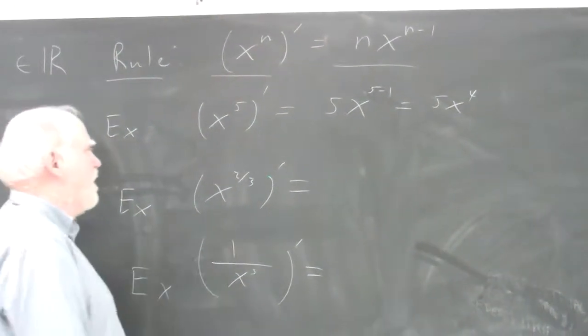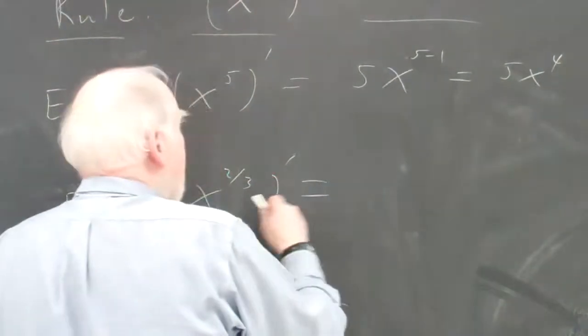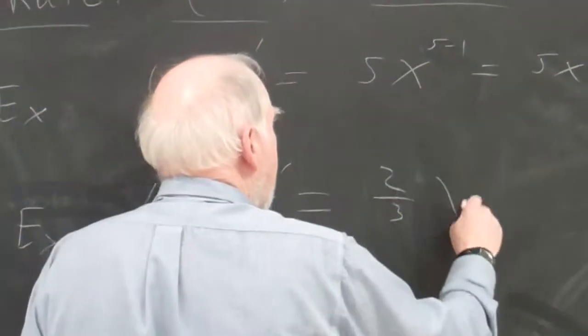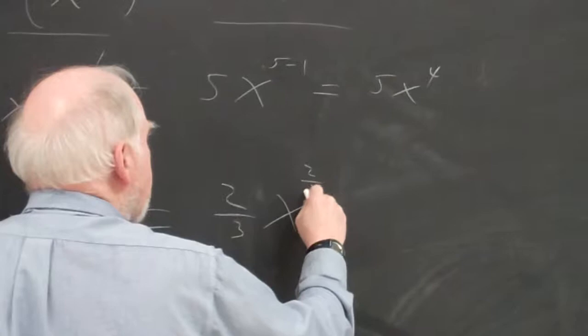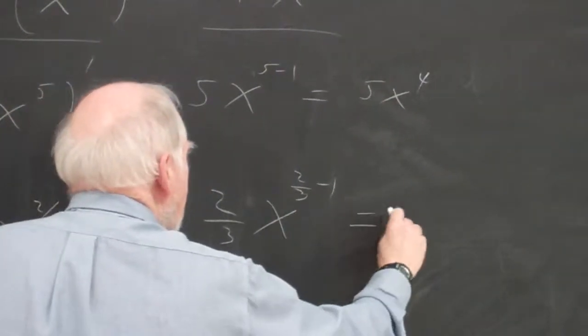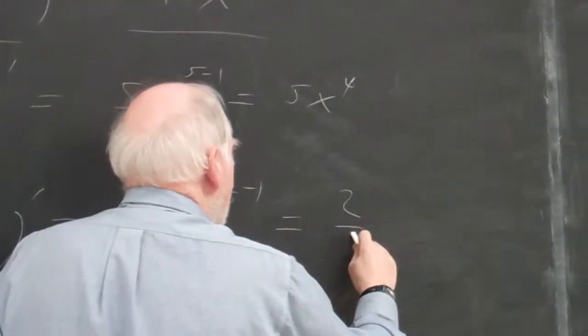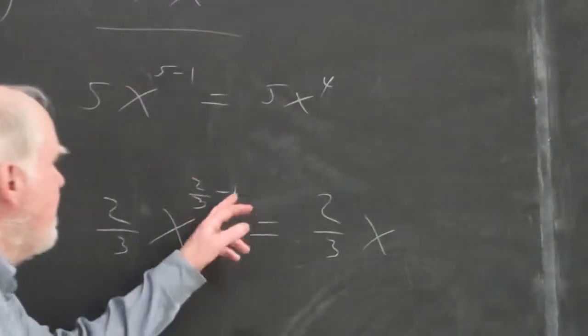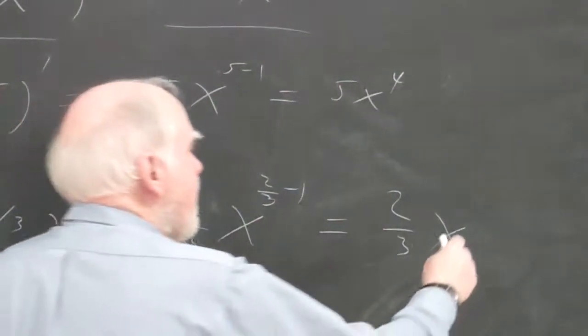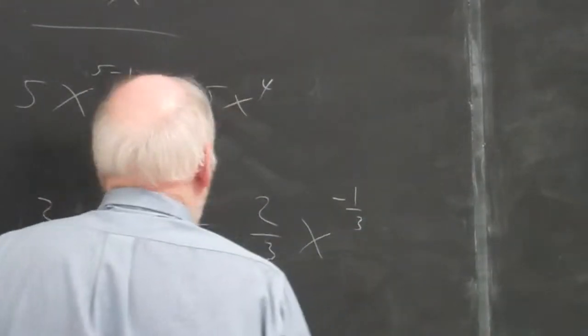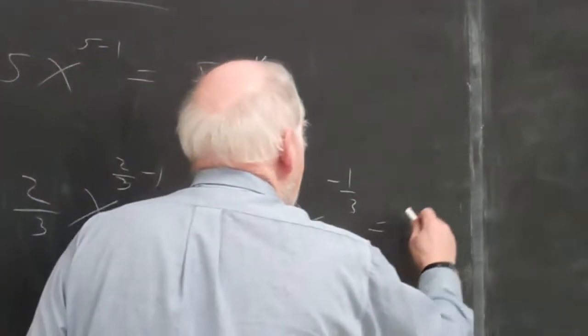Then you get into something like x to the 2/3. I bring 2/3 out front, and I take 2/3 and subtract 1. You have to realize it's 2/3 times x. Well, this is 3/3, isn't it? 2/3 minus 3/3 is negative 1/3.